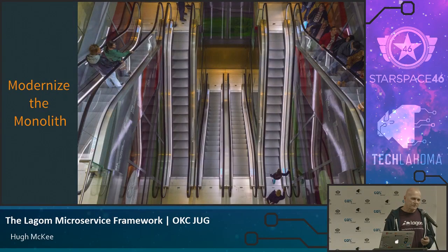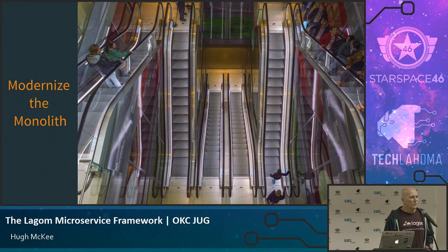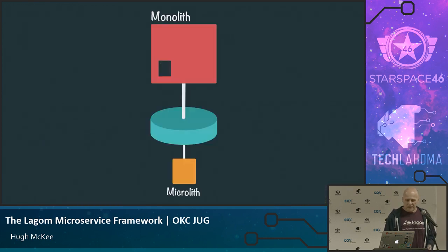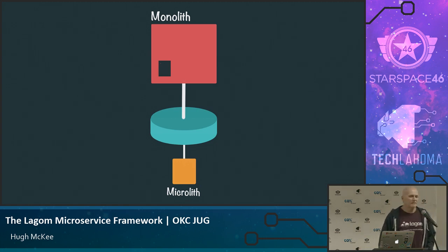These are some of the motivations for looking into new ways of building systems. You want to go faster, you want to address the business more quickly. These are motivations for the modernization and digital transformation people talk about. How many of you are working on what you'd call a monolithic environment? How many are doing microservice stuff? About half and half — cool.